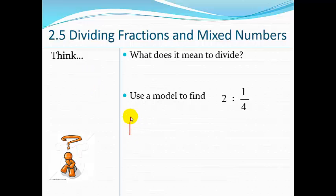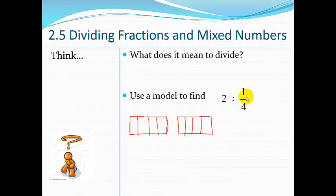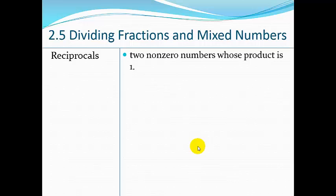Let's pretend we have two dollars — or candy bars or granola bars, whatever model works for you. You have two and you're going to divide it into one-fourths. Here's one of them, and each section is one-fourth. I take the other whole and break it into fourths. How many do I have? 1, 2, 3, 4, 5, 6, 7, 8. So two divided by one-fourth is 8.